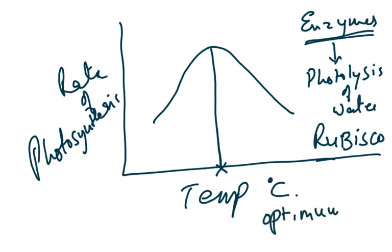The peak of the graph is the optimum temperature, which will vary for different plants. Some plants grow and fruit in winter, others in summer — for example, mangoes in summer and oranges in winter. This finishes syllabus points 13.2a, b, and e. The next video will cover C4 plants and 13.3, adaptations for photosynthesis.